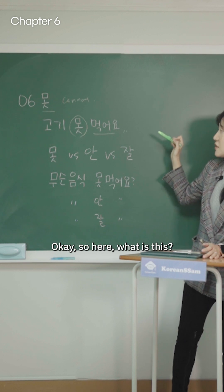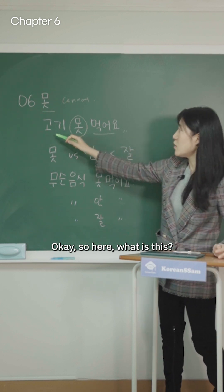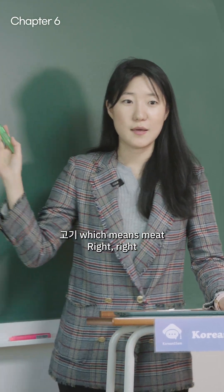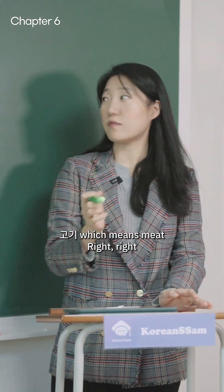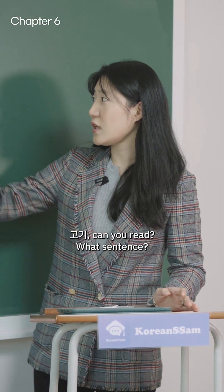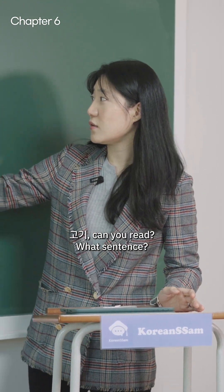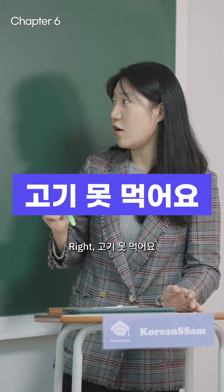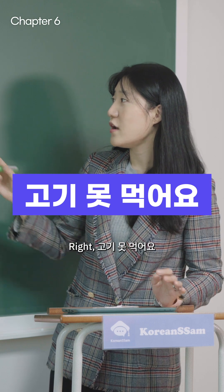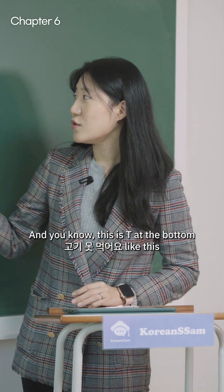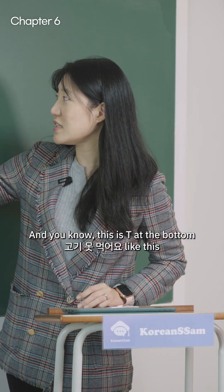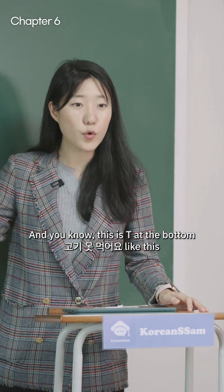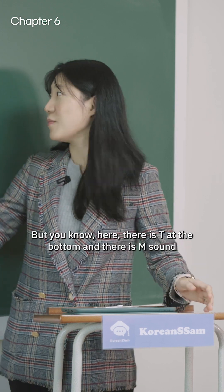So here — 고기, which means 'meat.' 고기 못 먹어요, 못 먹어요. And notice there is a T at the bottom. 고기 못 먹어요 — like this. But when there is a T at the bottom followed by an M sound, it is not a hard T. You can pronounce it like an N sound instead: 고기 못 먹어요 — more soft.